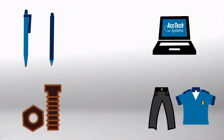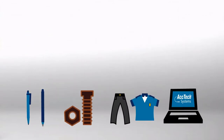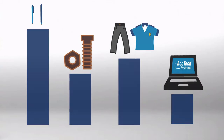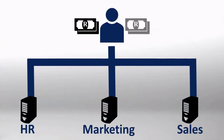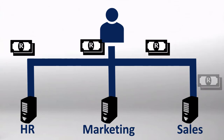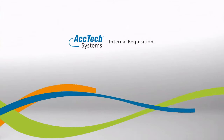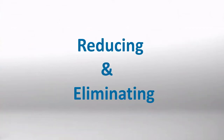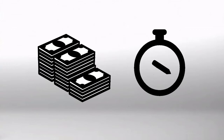Whatever it is, you need to maintain adequate stock levels at all times, and more importantly, the cost of these internally consumed items must be accurately allocated to the correct cost centers. ACTEC Internal Requisitions automates and manages the issuing of internally consumed stock, thus greatly reducing and sometimes completely eliminating the excessive costs and time normally associated with this important task.